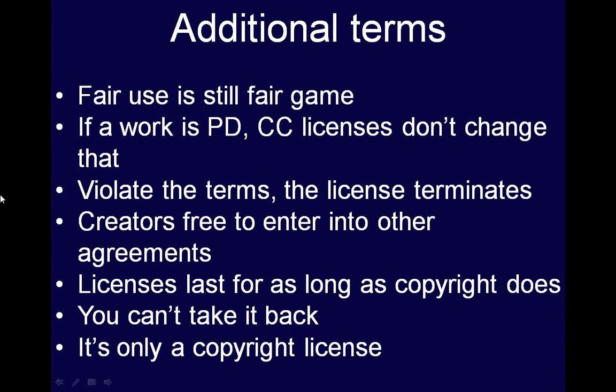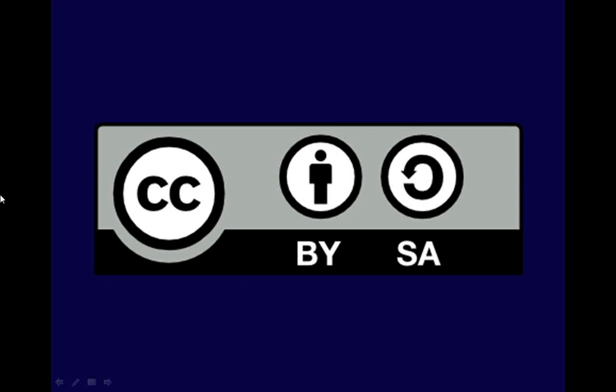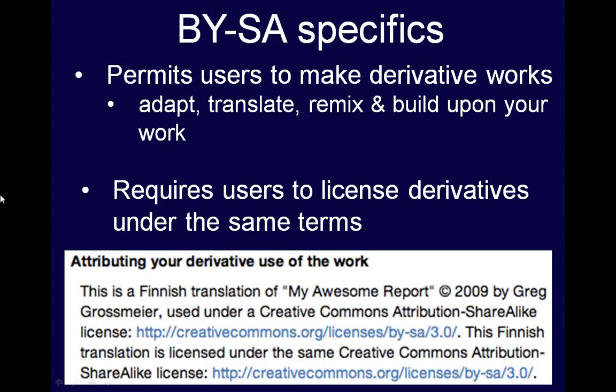We're most interested in the Creative Commons Attribution Share-Alike license since this is the license used by Wikia. So let's talk briefly about the specifics of the BY-SA license. First, BY-SA permits users to make derivative works — users can adapt, translate, remix, and build upon your work. For example, a user could take your BY-SA novel and turn it into a film, or translate your BY-SA textbook from English into Swahili, or make a painting from your BY-SA photograph.